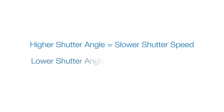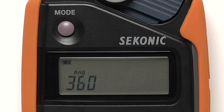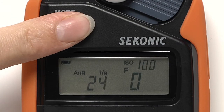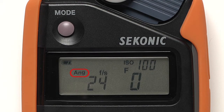A higher shutter angle number is like using a slower shutter speed. A lower number is like using a higher shutter speed. If a shutter angle other than 180 is selected, the 'ang' indication will appear on the measuring display.